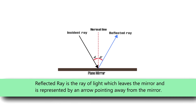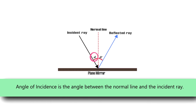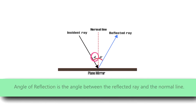The reflected ray is the ray of light which leaves the mirror, represented by an arrow pointing away from the mirror. The angle of incidence is the angle between the normal line and the incident ray, while the angle of reflection is the angle between the reflected ray and the normal line.